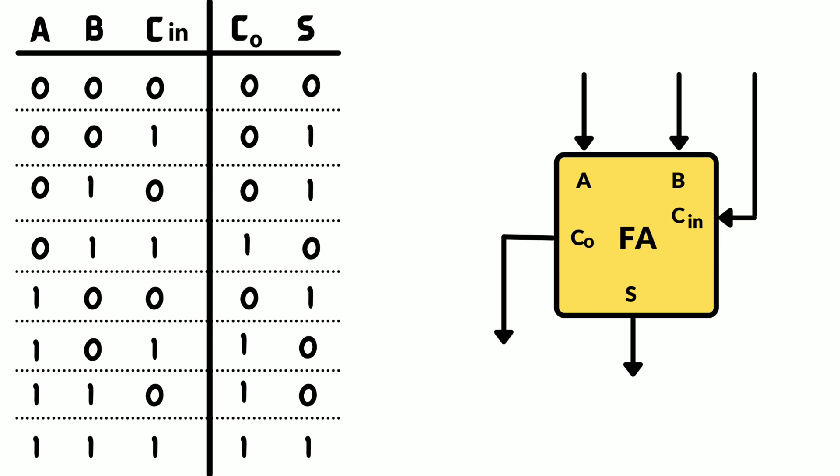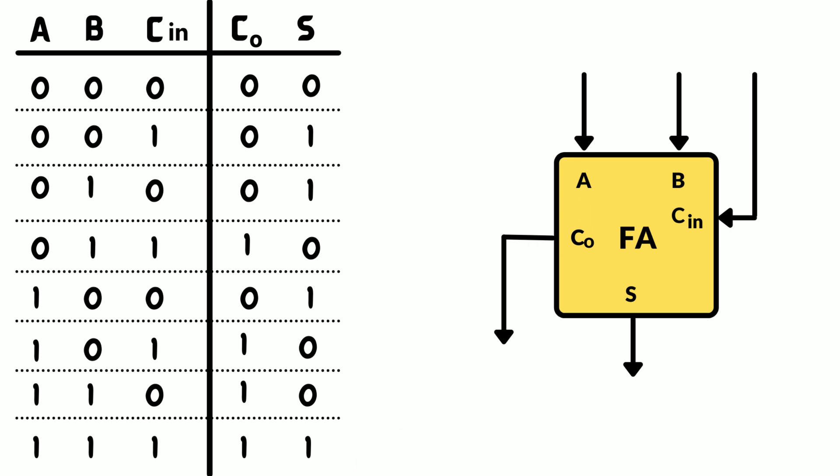The important point to observe in a full adder is that it counts the number of ones in its input. For example, where A is 1, B is 1, and C is 1, the output is 1 1 in binary, which is 3 in decimal. So a full adder with a 3-bit input gives a 2-bit output that counts the number of ones in binary. Full adder actually counts the number of ones in its input.